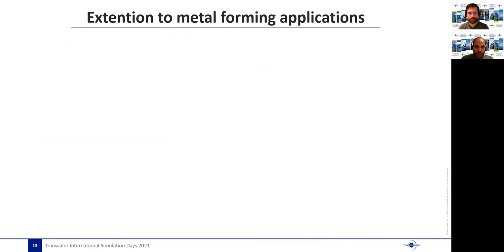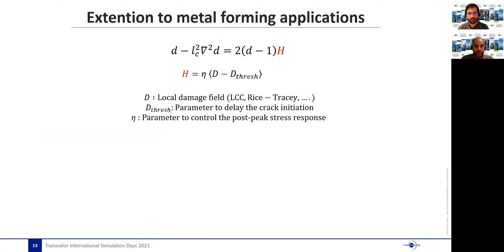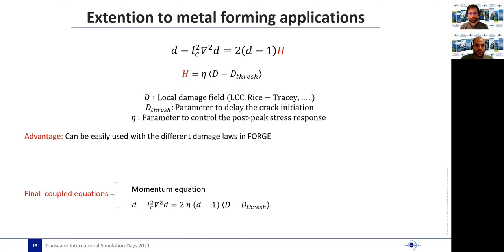Next, we need to have an extended model for the metal forming applications in which we are interested. So here we have proposed a new form for the energy functional H that is based on the local damage field evolution that can be used from the diverse models that are used in the industry, such as Latham-Cockroft, Rice-Tracey, etc., where we have introduced two model parameters, eta and threshold. So the threshold is used to delay the crack initiation and eta is used to control the post-peak stress by controlling the phase field evolution rate. So the main advantage here is that our model can be directly integrated with the library of different damage models that exist in Forge, so that it can be easily used by different industries. Finally, you will have a coupled system of differential equations, momentum equation and the phase field equation, that need to be simultaneously solved in order to find the crack propagation.